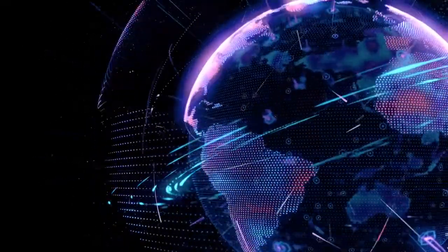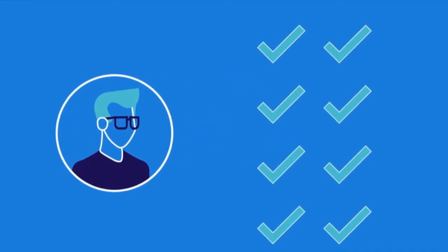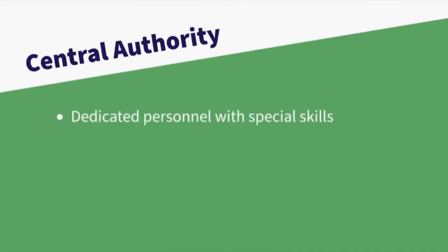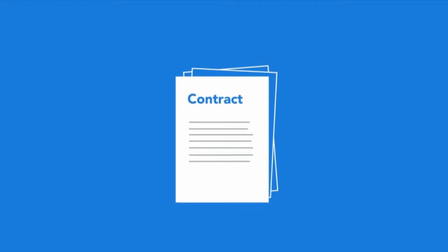The second potential weakness is that all power is held by the central authority. In computing, this is generally a good thing — for example, if you run an e-commerce website, you probably want total control over it. As the central authority, perhaps as CEO or CTO, you get to decide all aspects of that environment, including shutting it down. However, central authority often requires dedicated personnel with special skills, and many human checks and balances such as complex approval workflows. These systems are sometimes prone to errors and access delays, meaning humans remain the final arbiter of authority and transaction validity.